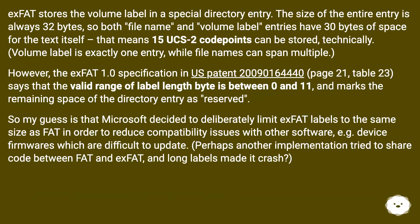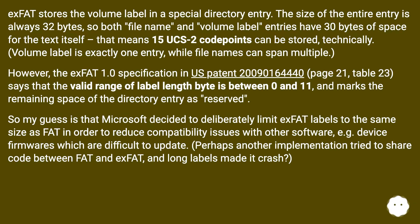exFAT stores the volume label in a special directory entry. The size of the entire entry is always 32 bytes, so both file name and volume label entries have 30 bytes of space for the text itself. That means 15 UCS-2 code points can be stored. Technically, a volume label is exactly one entry, while file names can span multiple entries.